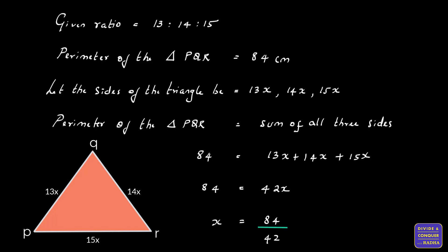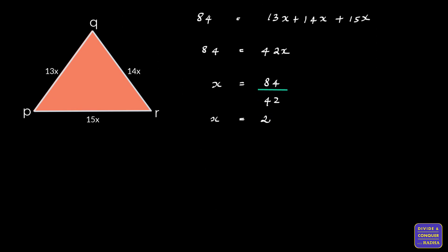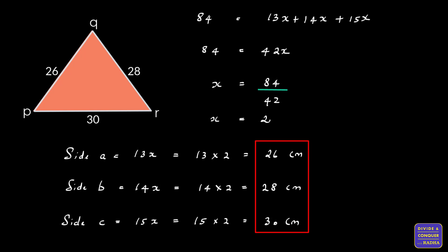So x = 84 ÷ 42, and since 42 × 2 = 84, x = 2. Now substituting x into each side: side a = 13x = 13 × 2 = 26 centimeters, side b = 14x = 14 × 2 = 28 centimeters, and side c = 15x = 15 × 2 = 30 centimeters. All three sides of the triangle have been calculated.